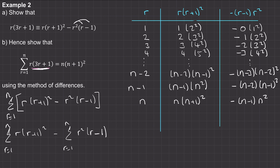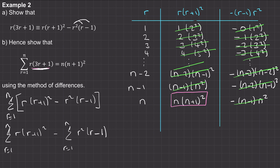Now we look at which ones cancel. Multiplying by zero cancels that term. One lot of two squared cancels with the negative one lot of two squared. Two lots of three squared cancels, and all the intermediate terms cancel in sequence. This term cancels with the one above it, and so on. So all we're left with is n lots of n plus one squared — exactly what we wanted to find.